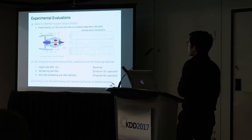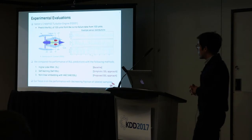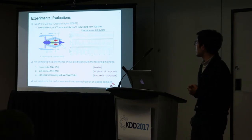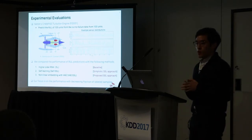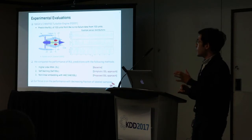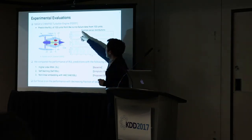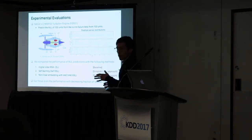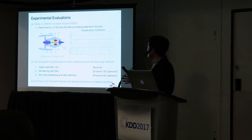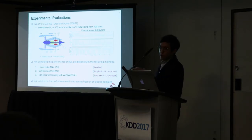For experimental evaluation, we used the famous NASA C-MAPS turbofan engine dataset, specifically FD001. The objective is to predict the RUL of 100 test engines from run-to-failure data from a separate set of 100 training engines. We train on 100 units and make predictions on another 100 units.